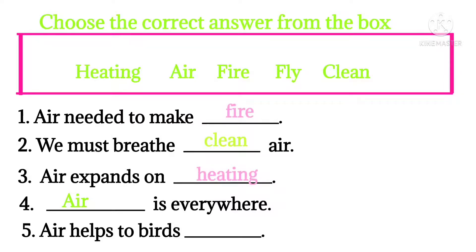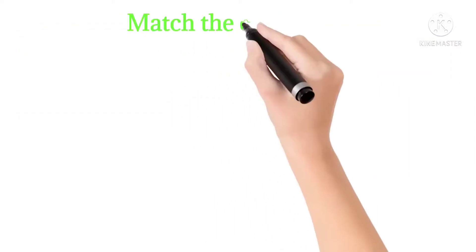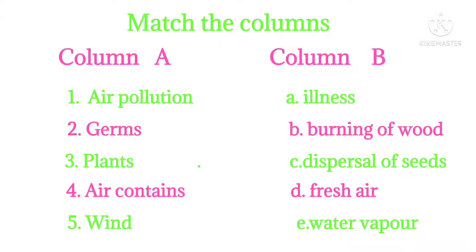Next, match the columns. Column A: air pollution, germs, plants, air contains, wind. Column B: illness, burning of wood, dispersal of seeds, fresh air, water vapour.